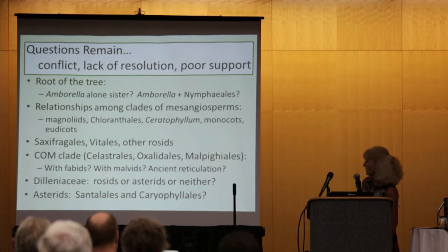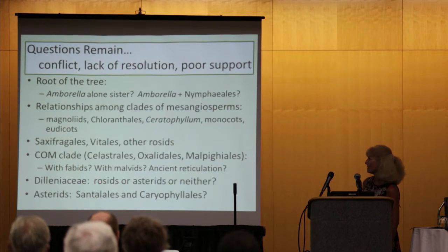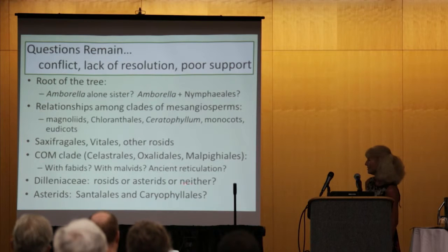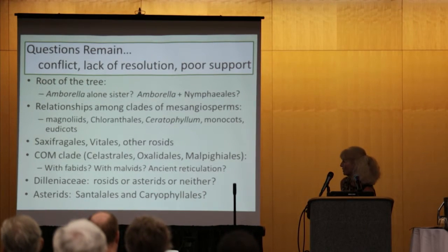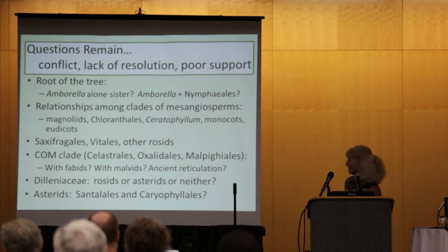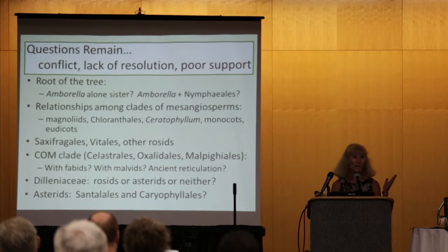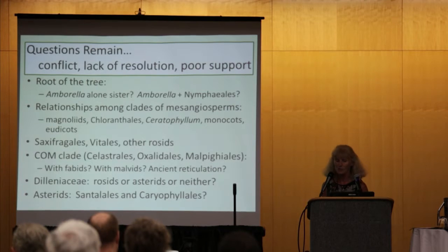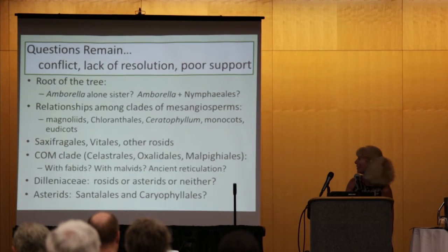Some other questions: Dilleniales are sometimes placed as sister to the whole rosid clade, sometimes to the Asterids, sometimes to the whole group — we really don't know where this family goes. And within the Asterids, recent analyses have placed Santalales and Caryophyllales as part of a very large Asterid clade, but not with particularly strong support. We're wondering if the 1KP data may help with this as well.